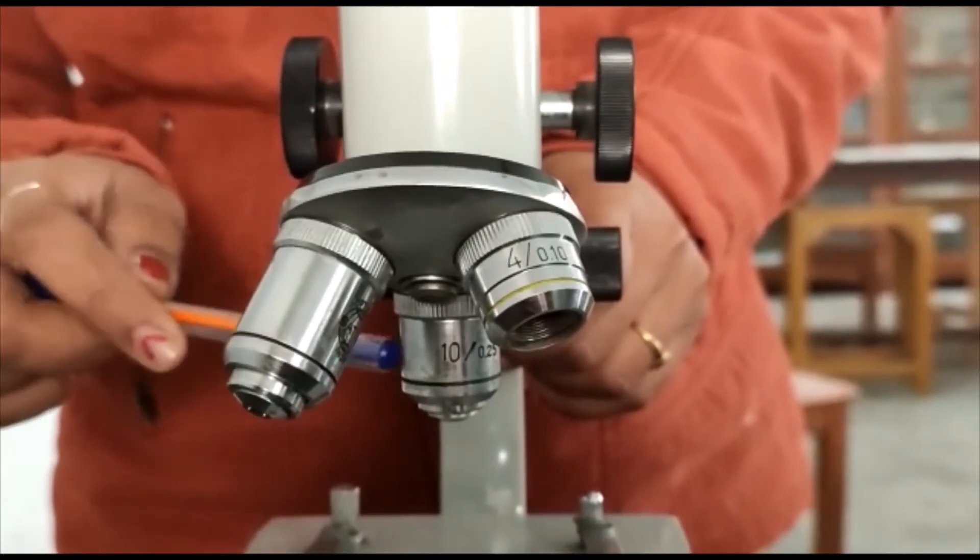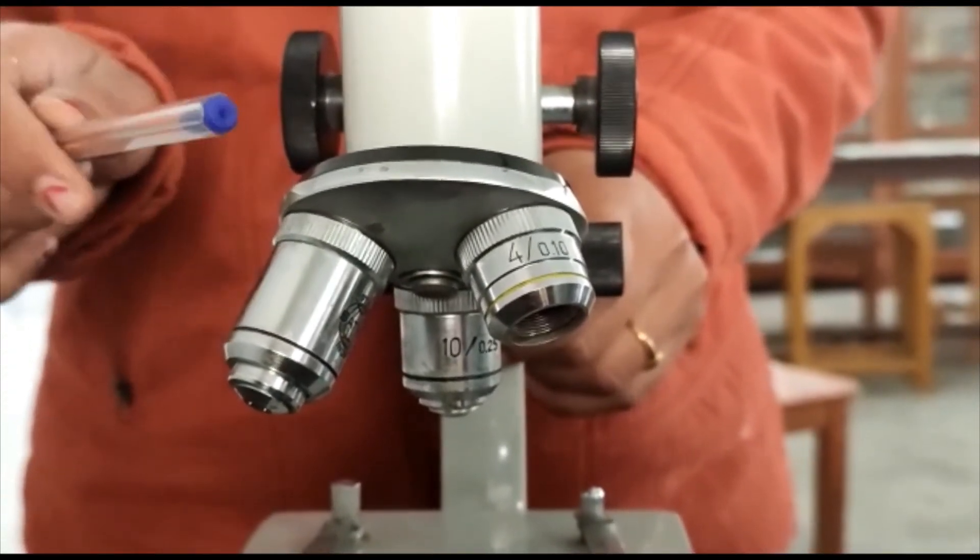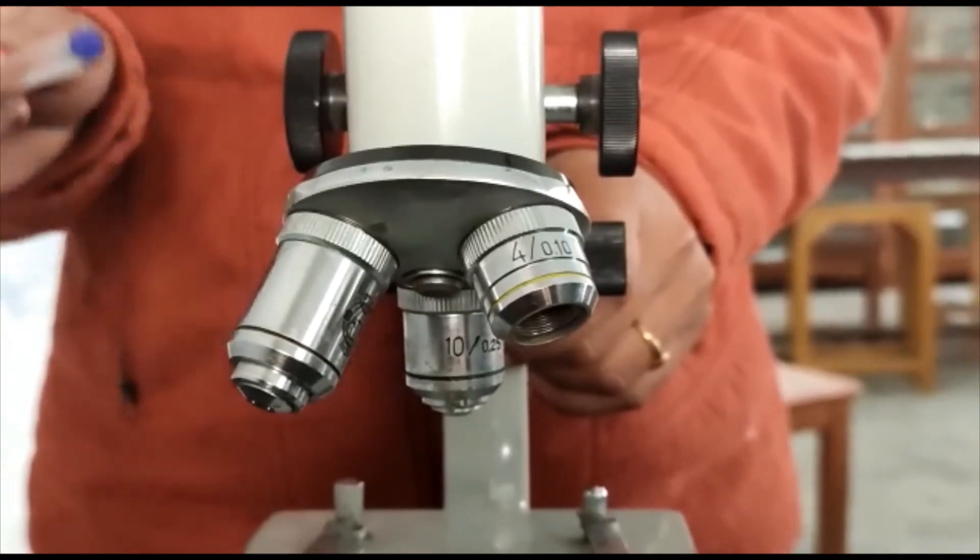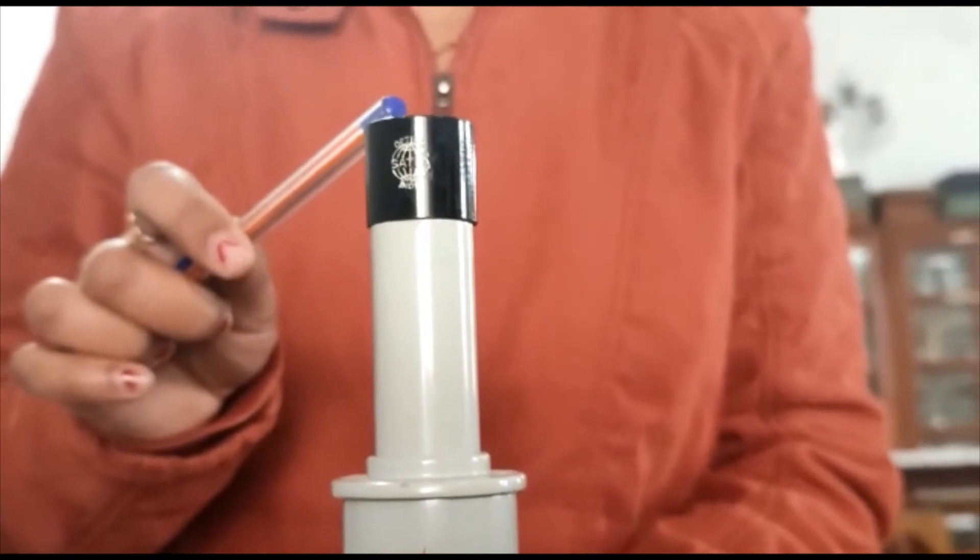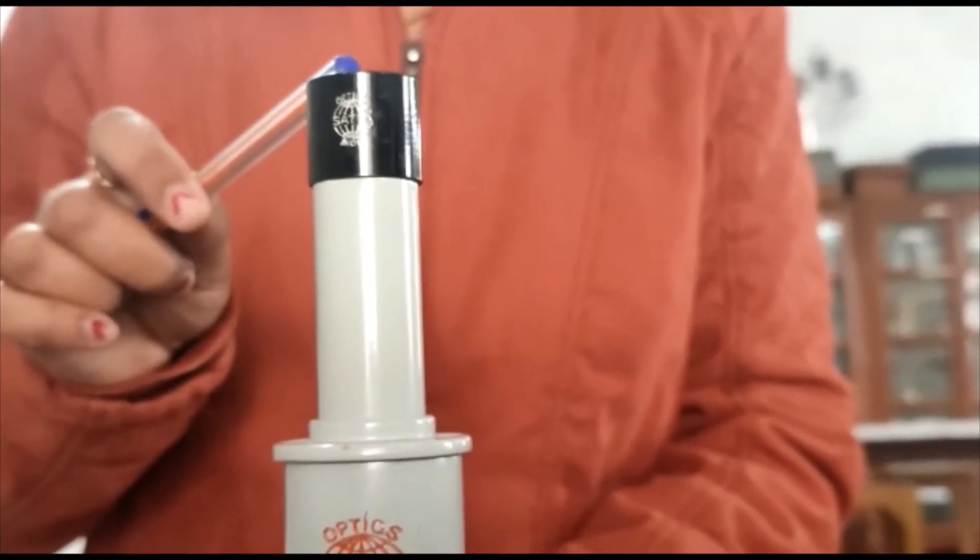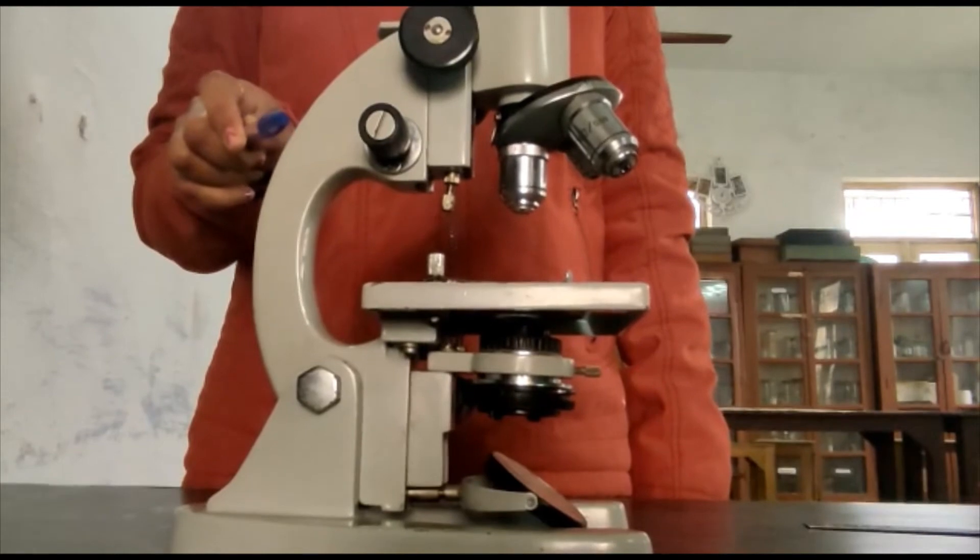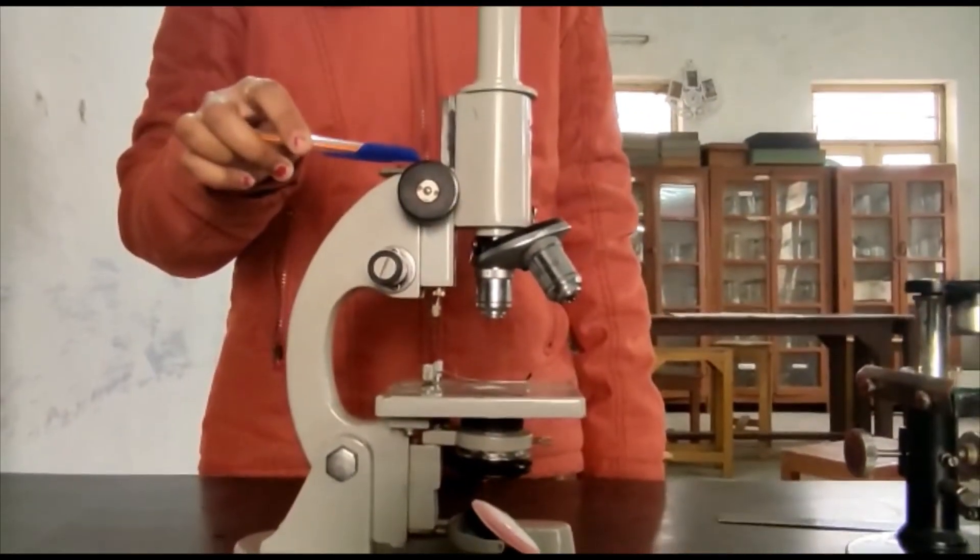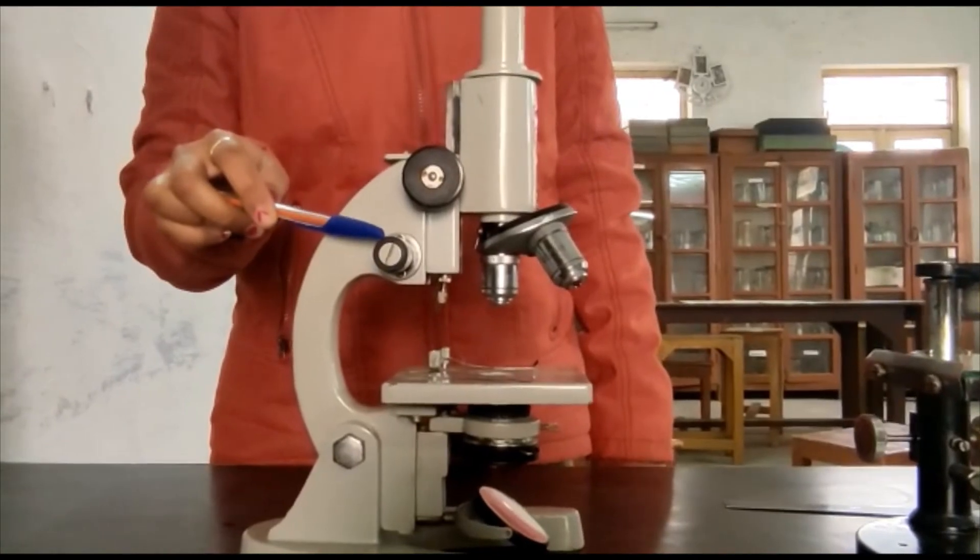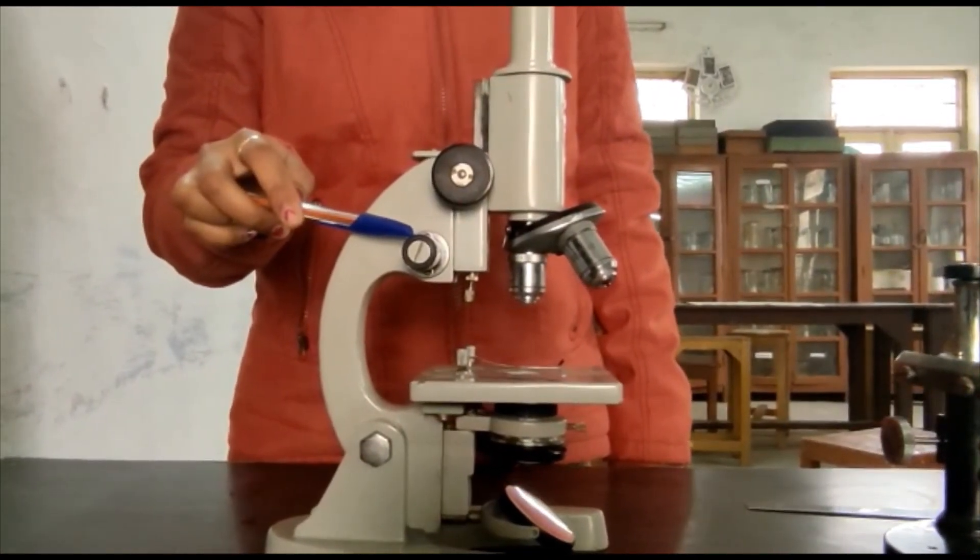Here this is the nose piece and objective lenses of high power and low power attached with it. Next is the body tube and at the upper end this is the eyepiece or ocular lens. Next is arm and here are two adjustments: coarse adjustment and fine adjustment.